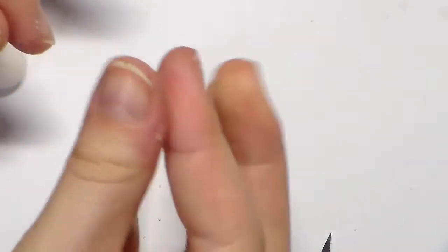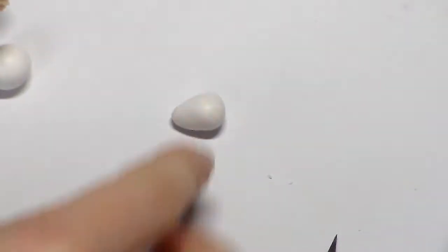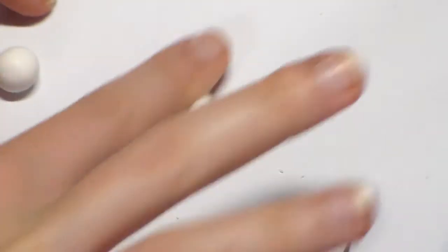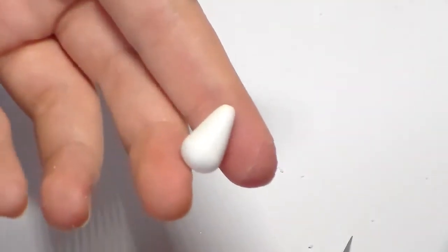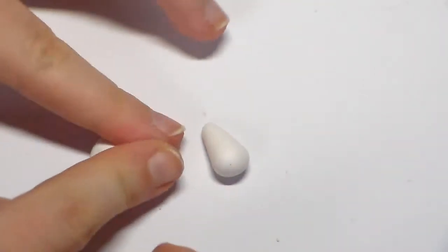Next step is to form the white translucent clay part into a teardrop shape. Then shape the white clay piece into a dome.